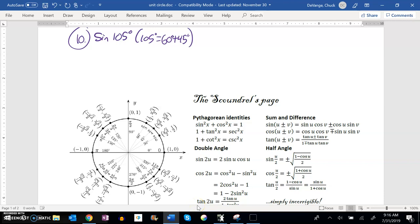This is Math 142 practice finals question number 10, and we are being asked to find the exact value of sine of 105 degrees. We're even told we can break up 105 degrees by considering it 60 plus 45.